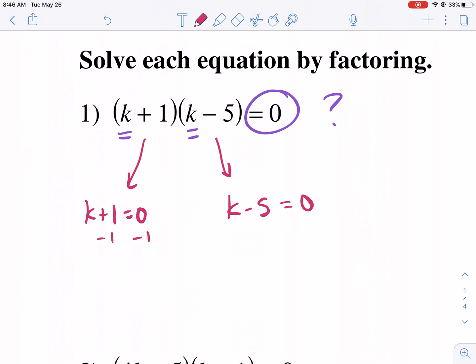So we're going to subtract one from both sides, and we get k equals negative 1. And over here we add 5, and we get k equals 5. So we have two answers.